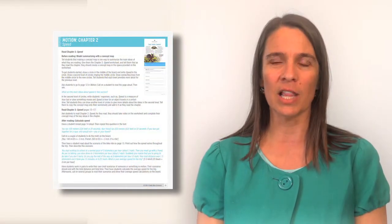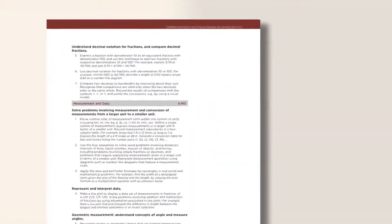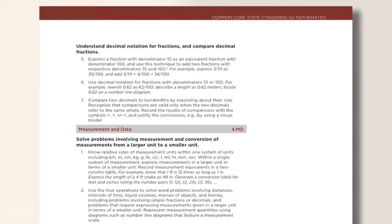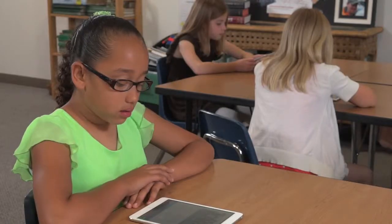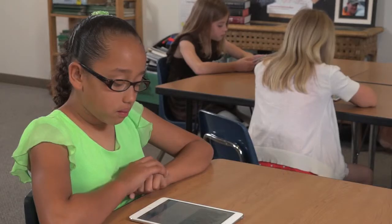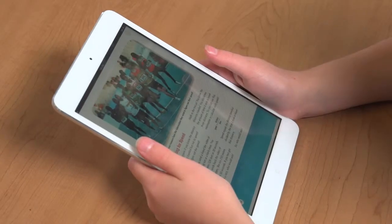Here's an example from the Activity Guide for the Key Concepts book, Motion. This activity aligns to the 4th grade standard calling for students to solve word problems involving distances and intervals of time. After students read about speed in Chapter 2 of Motion, draw their attention back to the third page of the chapter.